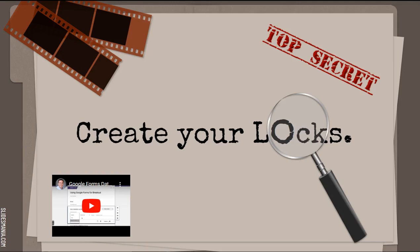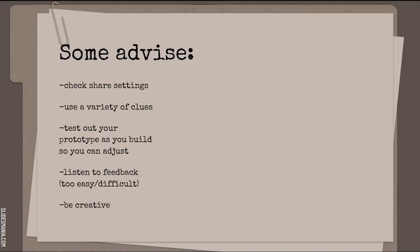Some general advice: make sure that you check all the share settings of your clues and everything that you're sharing so people can get to it. Use a variety of clues, and please test out your prototype as you're building so that you can adjust — it's so much easier to fix things as you go through your Google Site. Even at the end when I have a classmate check the prototype, there's always that little something that needs to be fixed.